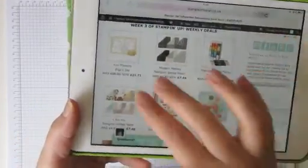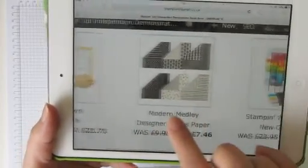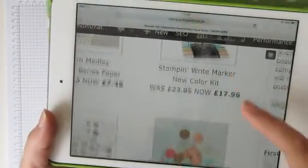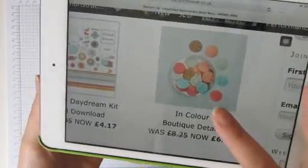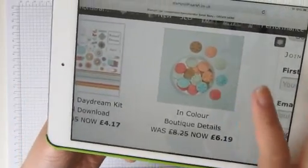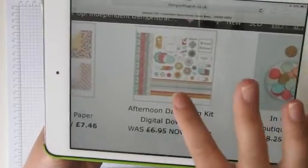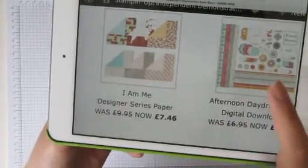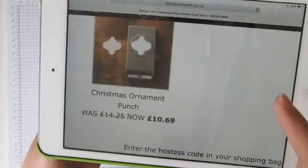We have the fun flowers die, the modern medley designer series paper, the Stampin' Write new colour kit, the boutique details which aren't buttons, they're just flat embellishments. We have the afternoon daydream kit which is a digital download for MDS. We have the I Am Me designer series paper and also the Christmas ornament punch.